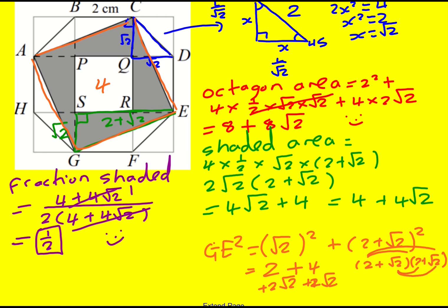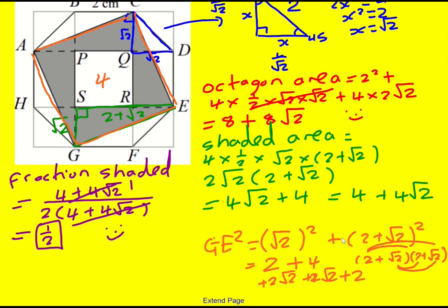Then finally plus root 2 times root 2, so plus 2. And this becomes 8 plus 4 root 2.